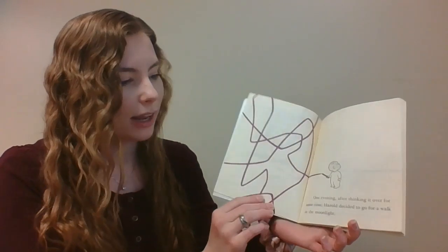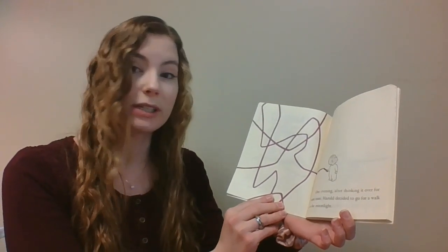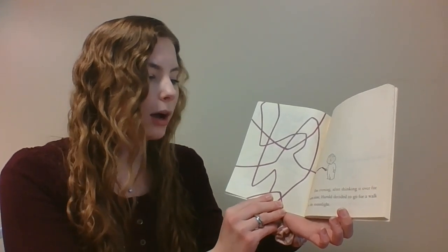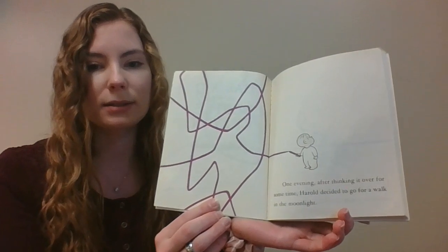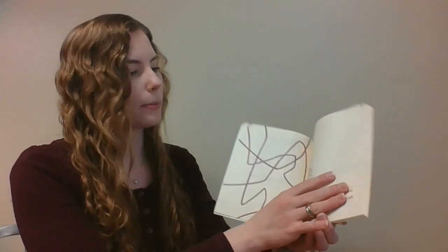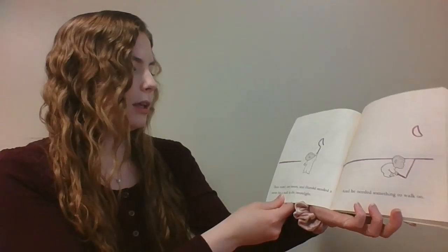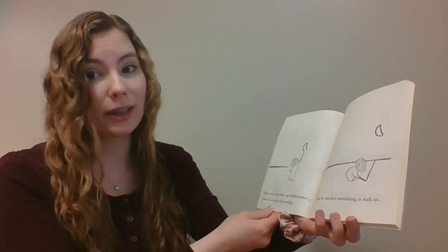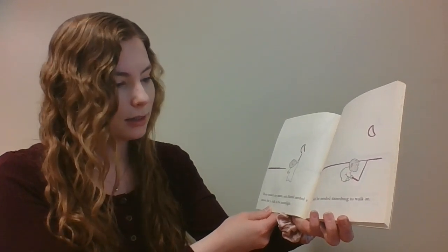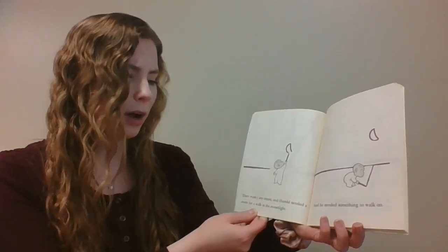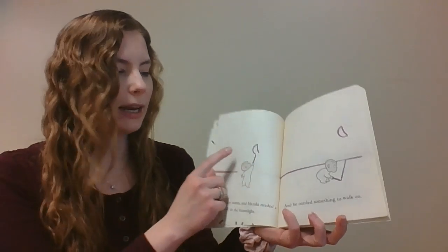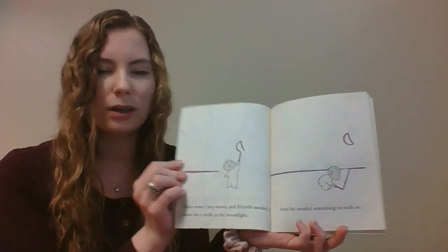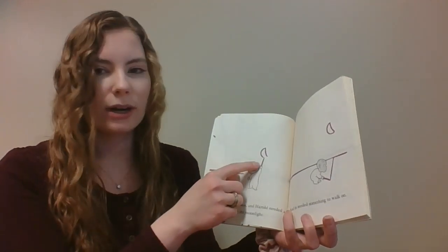One evening, after thinking it over for some time, Harold decided to go for a walk in the moonlight. There wasn't any moon and Harold needed a moon for a walk in the moonlight. So if he needed a moon, what did he do so he could have a moon? He used his crayon to draw it. Maybe that's why it's called Harold and the Purple Crayon.